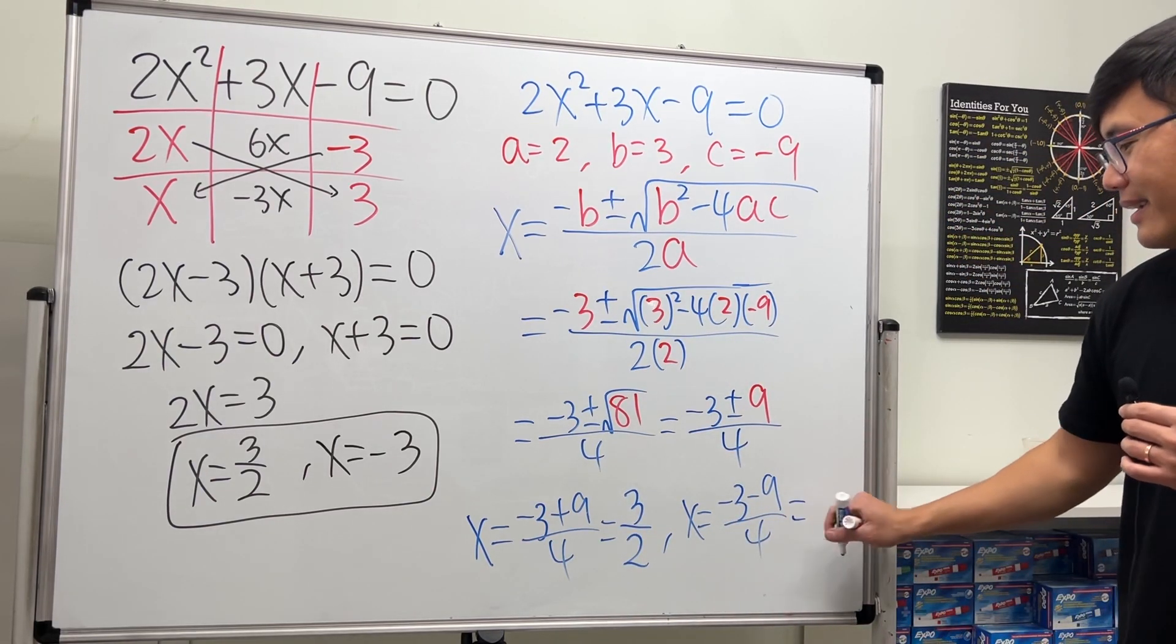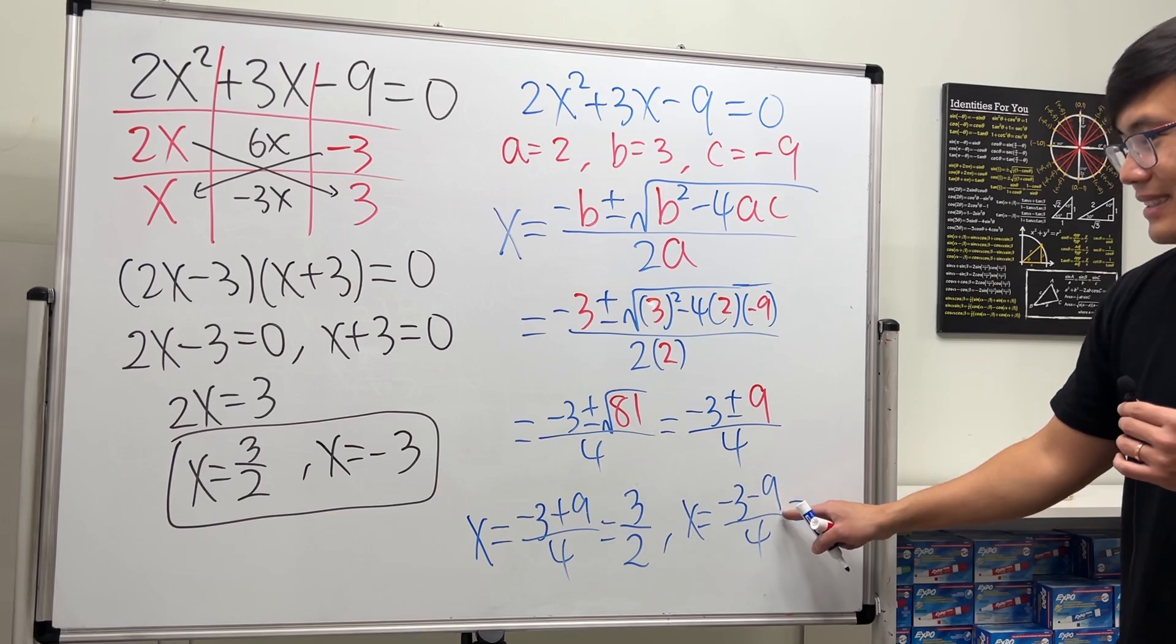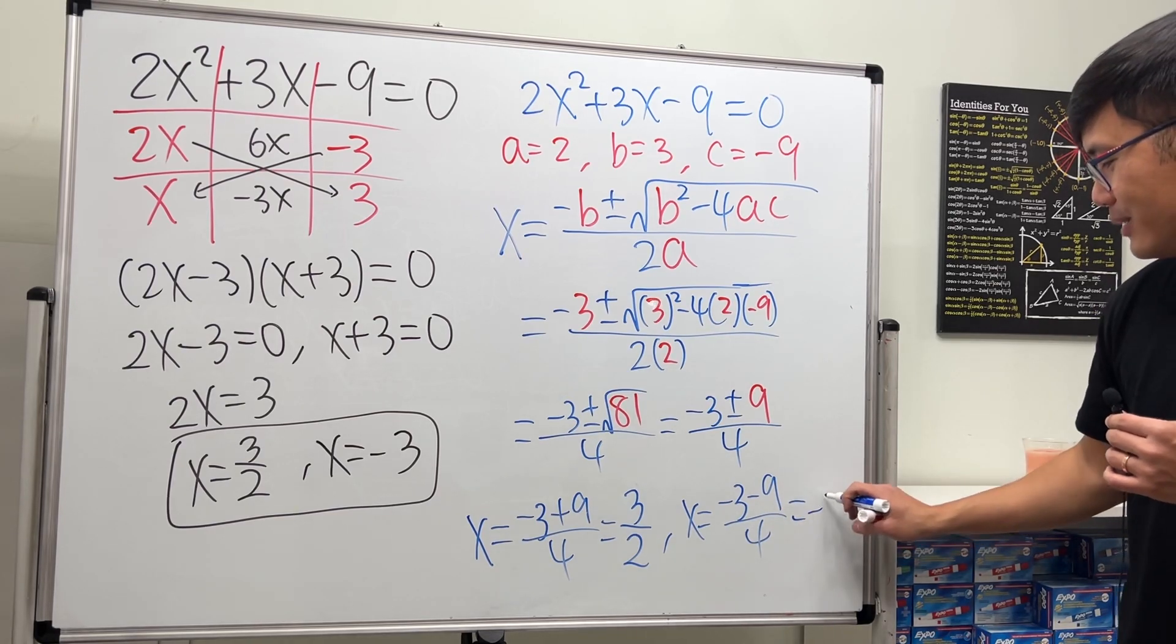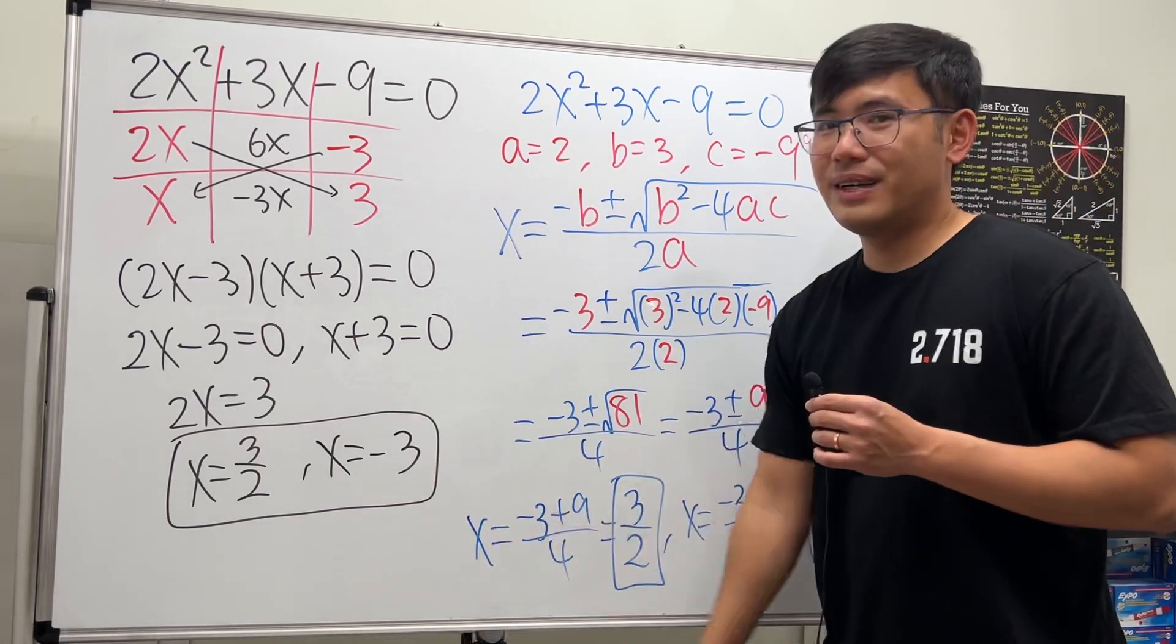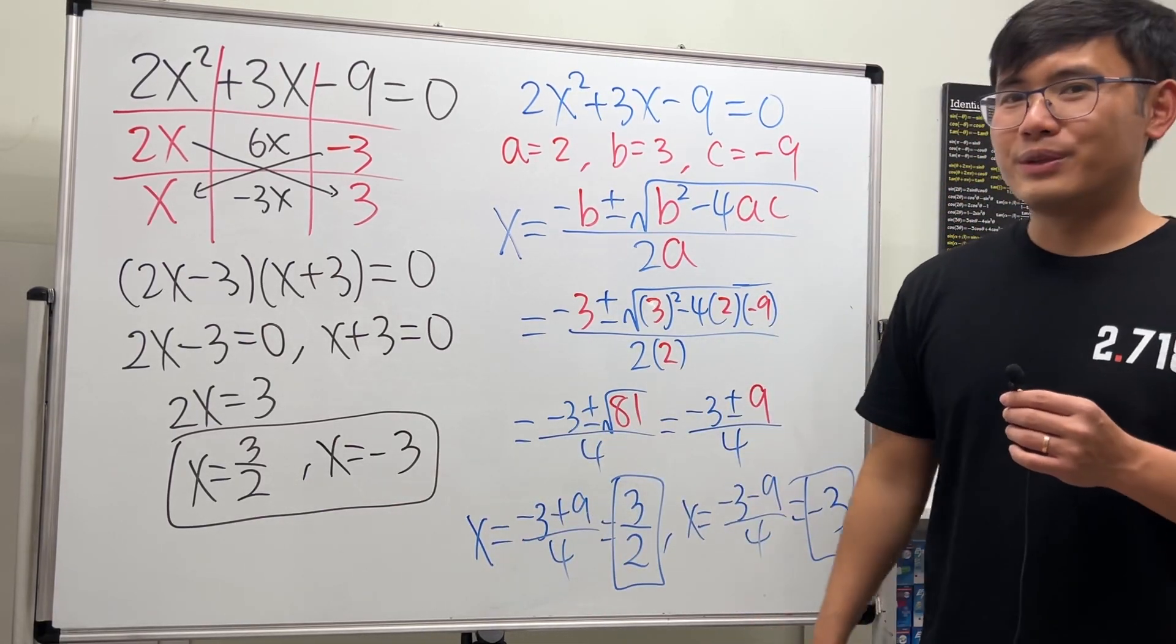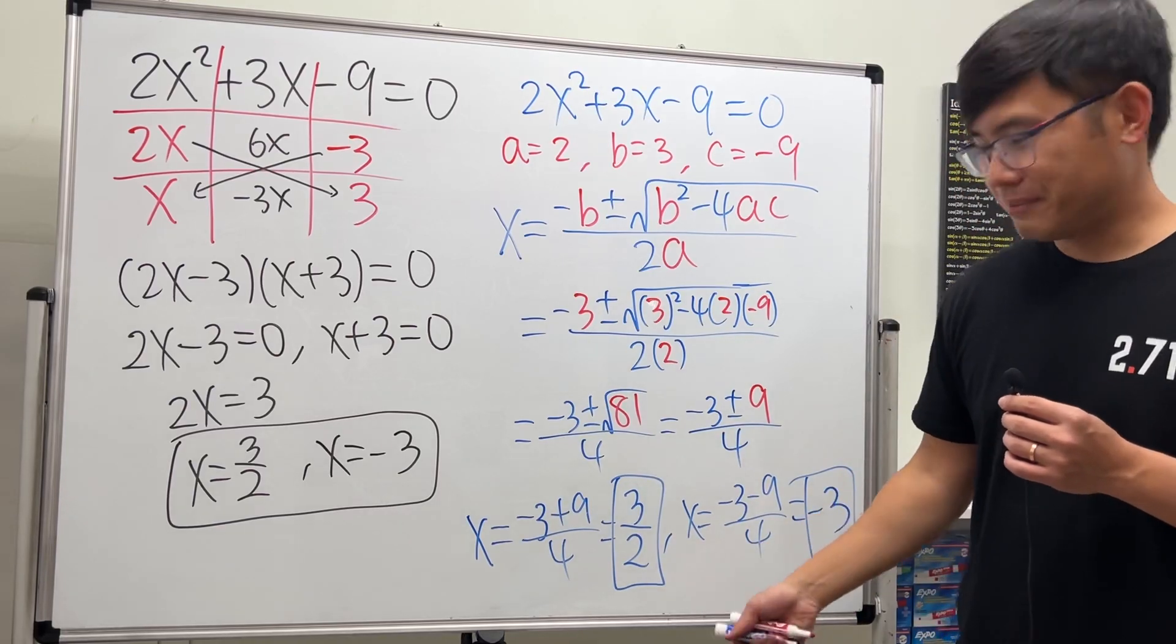The other one, negative 12 divided by 4 is negative 3. Of course we have the same answer, this and that. Let me know which one you guys like more. That's it.